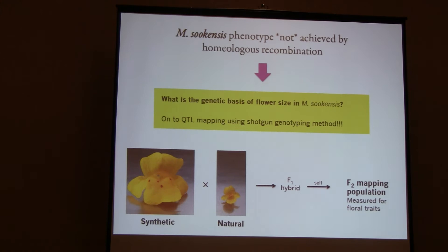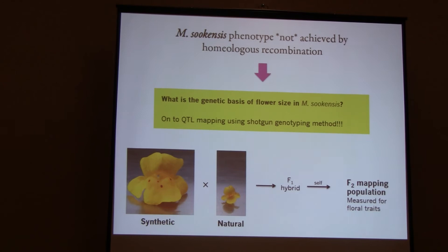The whole genome sequence data told me that the phenotype is not likely caused by homeologous recombination, so I'm still left with the question: what is the genetic basis of flower size in suquensis? The synthetic tetraploids are actually very large — they look like a large diploid F1 — making it even more convincing that some evolution occurred to achieve small flower size. So I took a large-flowered synthetic tetraploid, crossed it to a natural small-flowered tetraploid, selfed the F1, and created an F2 mapping population that I measured for floral traits.